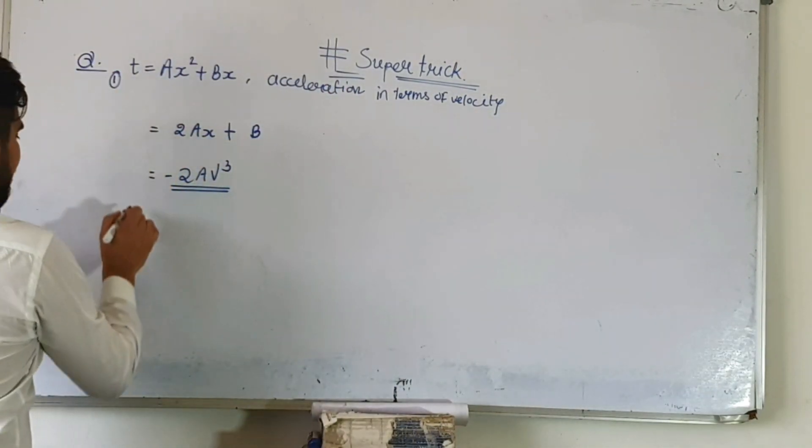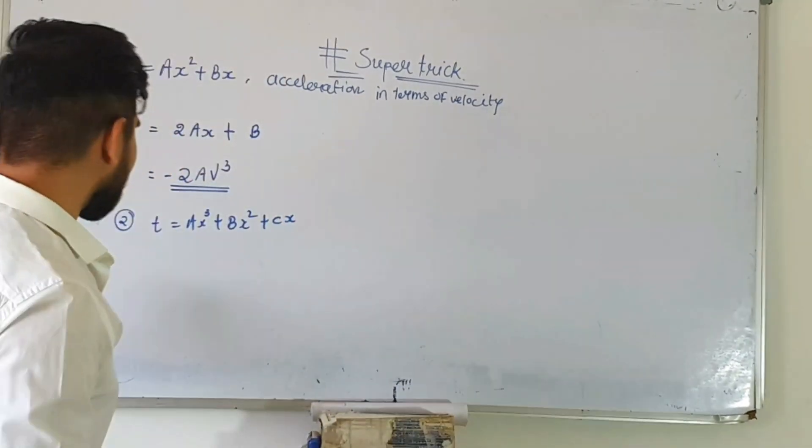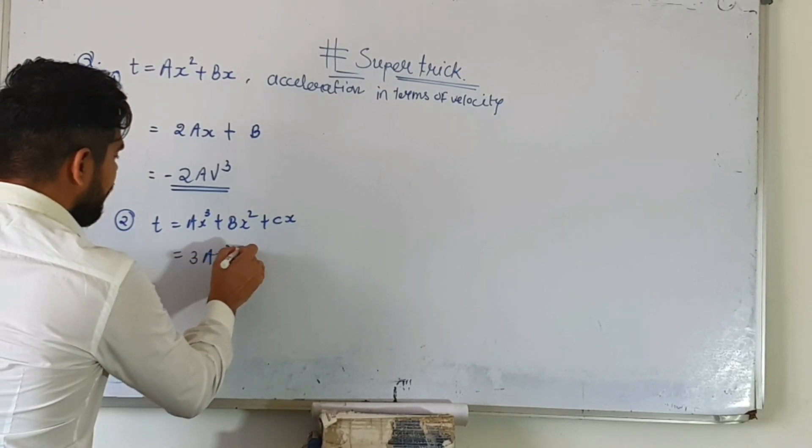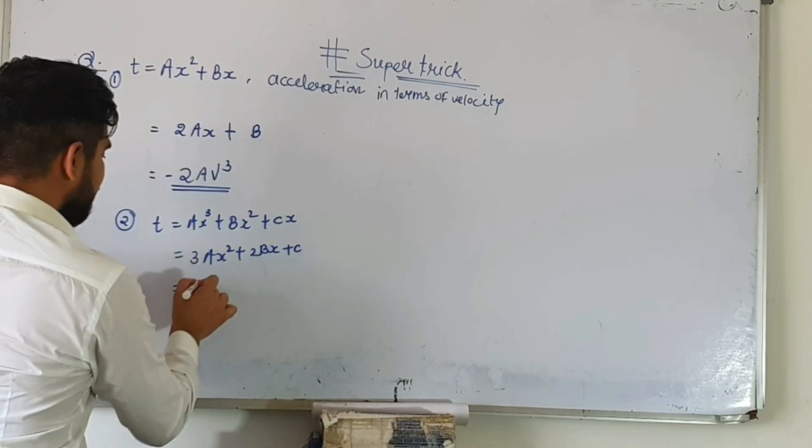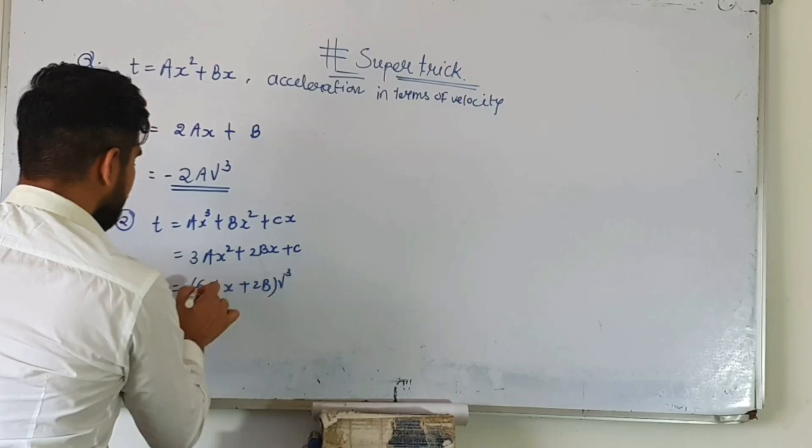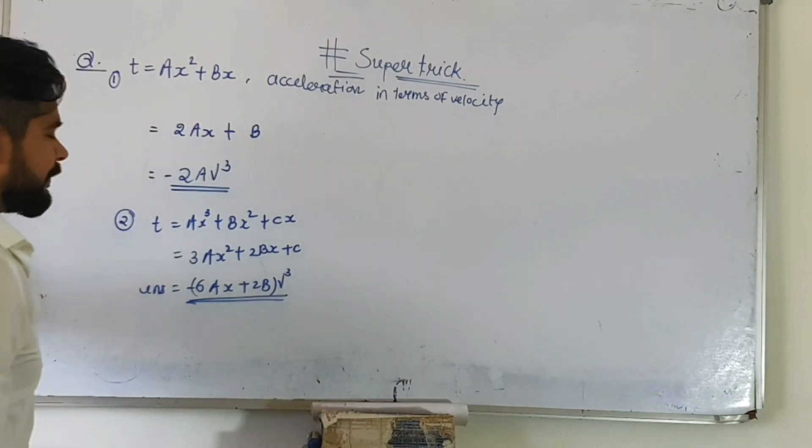Let's see another example. Again the same question, we have to find acceleration in terms of velocity. What to do? First differentiation gives 3ax square. Second time gives 6ax plus 2b. Put minus in front, put v cube behind. This is your answer. Amazing! Done.